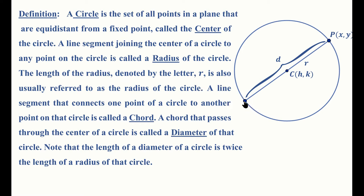A line segment that connects any two points on a circle is called a chord. Some chords have the special characteristic that they also go through the center, such as the one depicted here. Such a chord that goes through the center is called the diameter. Notice that the length of the diameter is therefore twice the length of the radius, and we will be needing that in some situations we will encounter.